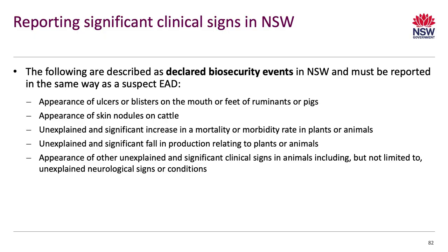The appearance of other unexplained or significant clinical signs in animals, including but not limited to unexplained neurological signs or conditions — and that includes horses. So things like Hendra virus are obviously a concern. We are very good in this region — a lot of the horse vets will do Hendra exclusions on horses with either colic or neurological signs, and full credit to those horse vets for taking that on board.